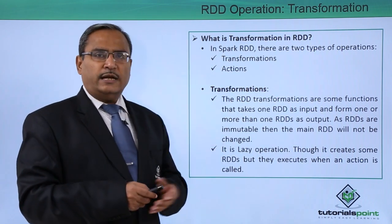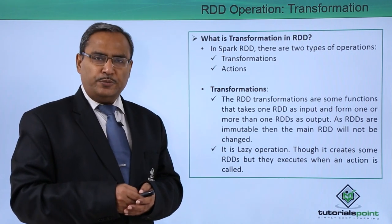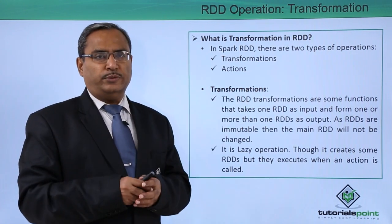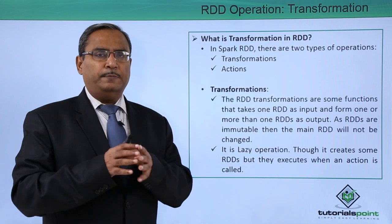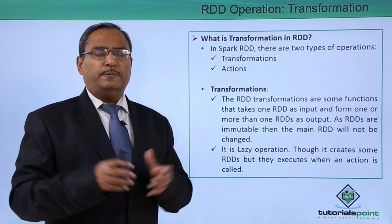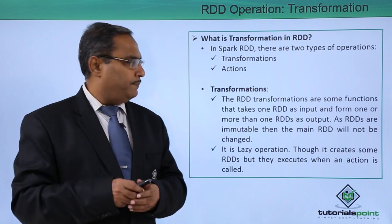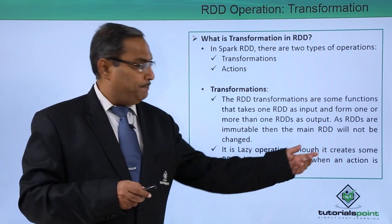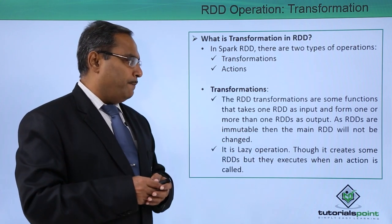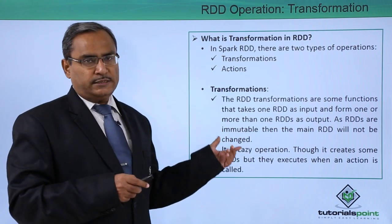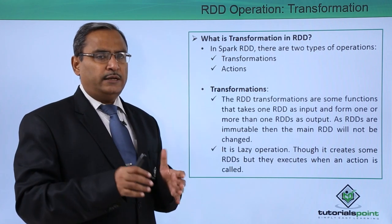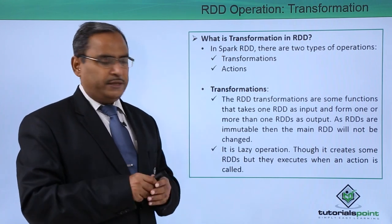RDD stands for Resilient Distributed Dataset. This is nothing but one data structure with the help of which a dataset can be distributed into multiple servers and multiple nodes, so that multiple processes can work on them simultaneously at the same time. All RDDs are immutable, meaning the main RDD will not be changed.